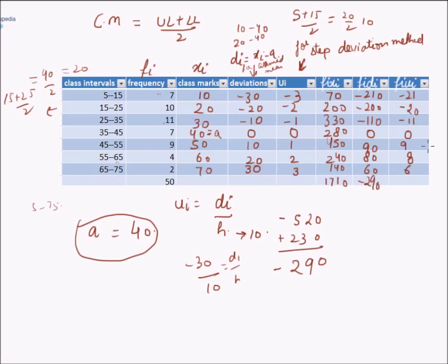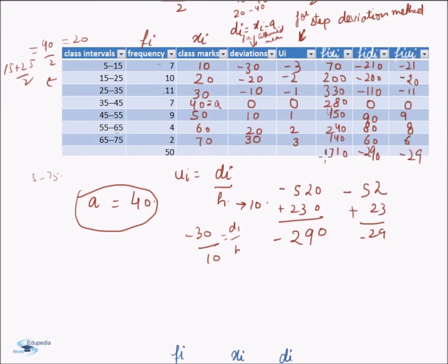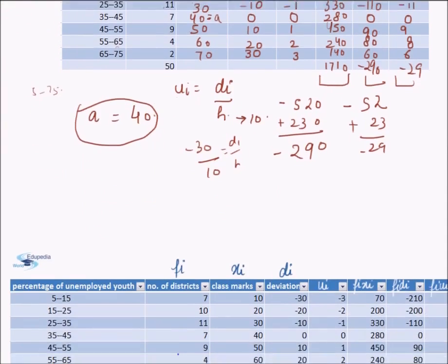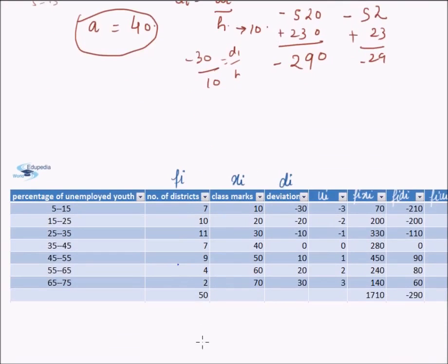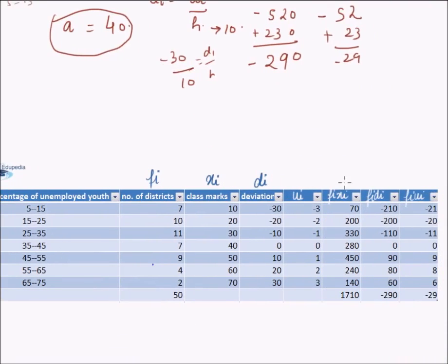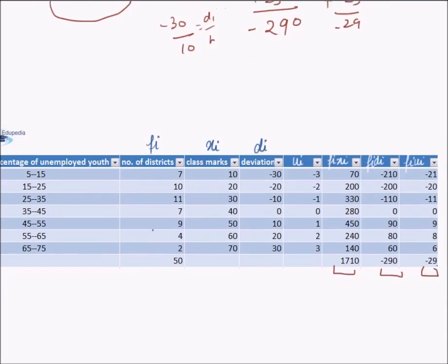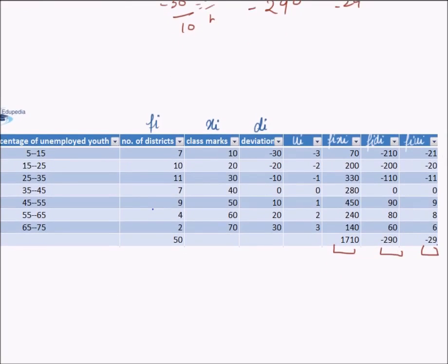For Σfidi, the negative values sum to −520 and positive values sum to 230, giving Σfidi = −290. For Σfiui, the negative values sum to −52 and positive values sum to 23, giving Σfiui = −29. Now we have all values needed for the final calculations: Σfixi = 1710, Σfidi = −290, Σfiui = −29, and Σfi = 50.